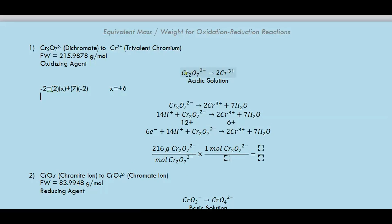For trivalent chromium, the oxidation number is obviously +3. So chromium is reduced from +6 to +3, and therefore dichromate is an oxidizing agent. To get the equivalent weight of this oxidizing agent, we need to know how many electrons were transferred. It's not simply formula weight divided by three — you need to balance and derive the half reaction.